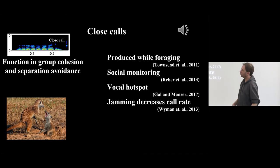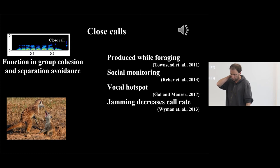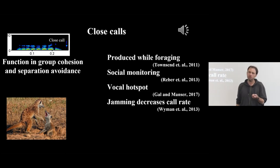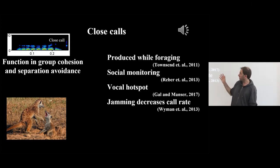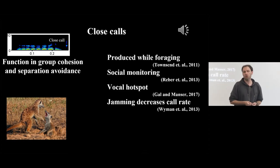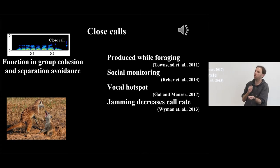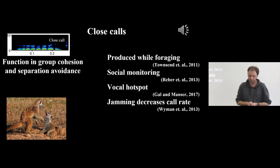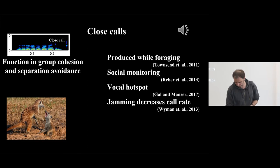The social monitoring of other individuals in the group, sensitivity to interference, may make close calls a good candidate for a bidirectional exchange — it might not function if there is a lot of noise in the area. This is how it looks in real life.